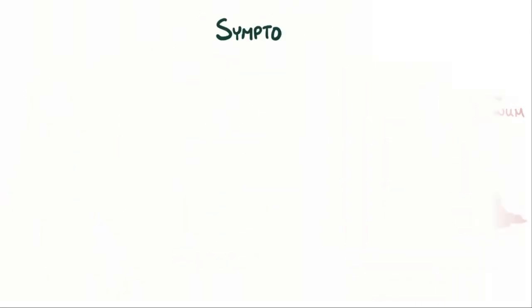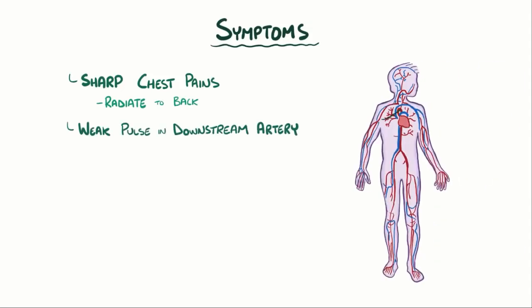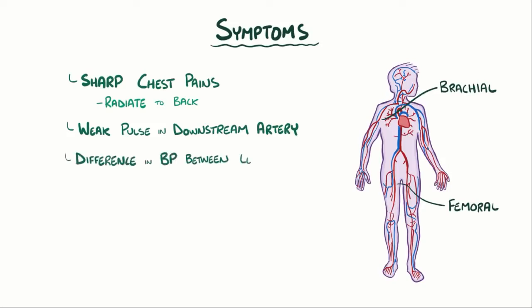The main symptoms of aortic dissection are sharp chest pains that often radiate to the back. A person might also develop weak pulses in downstream arteries like the brachial or femoral arteries, or sometimes there might be differences in blood pressure between the left and right arm.